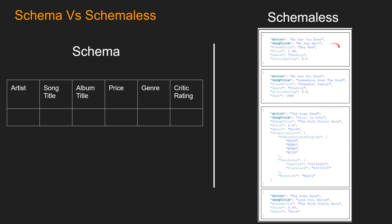Now let's take a look at a schema-less structure used for NoSQL. If you think of each box as equivalent to a row in the table: the first row has artist, song title, album title, price, genre, and critic rating. However, the second row in the NoSQL table does not have the price but has a year. And the third row has different stuff like promotion info, tour dates, rotation, etc. When you use NoSQL tables, you do not need a predefined schema.